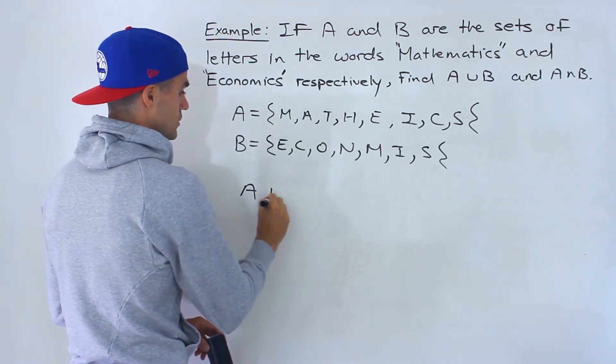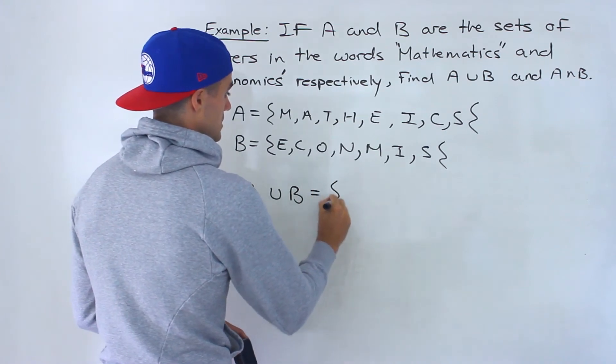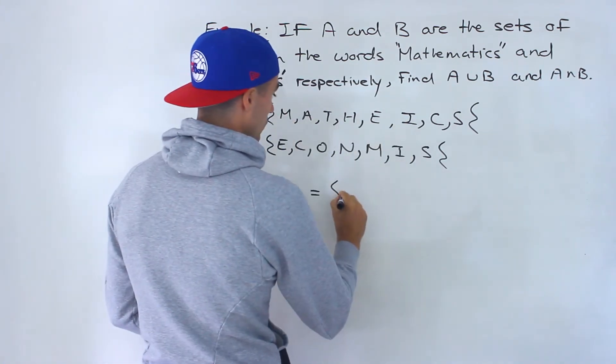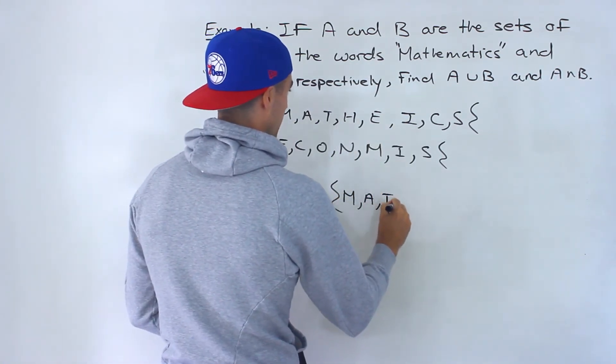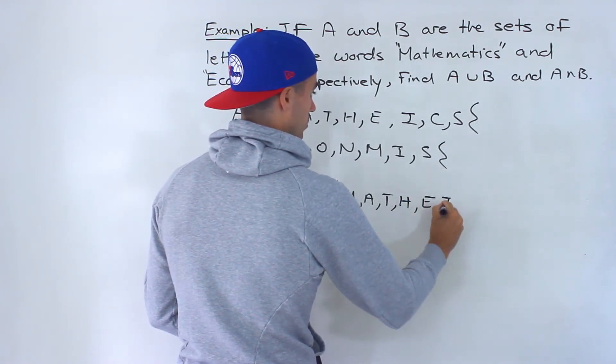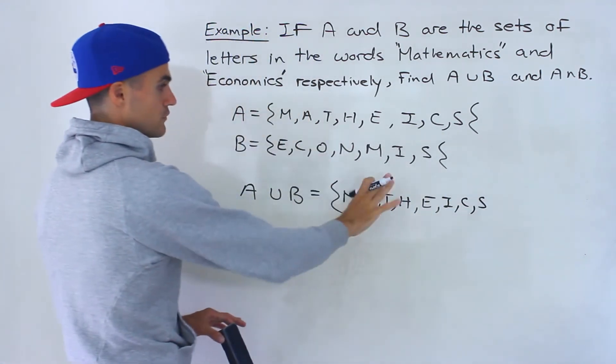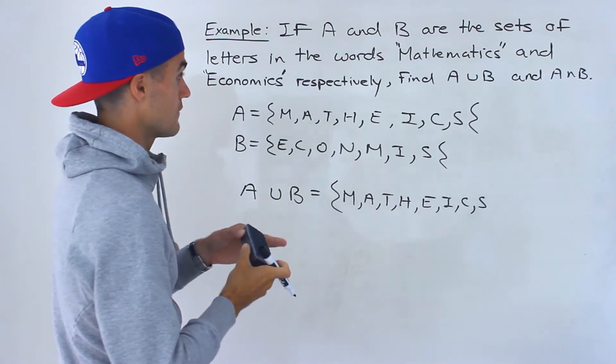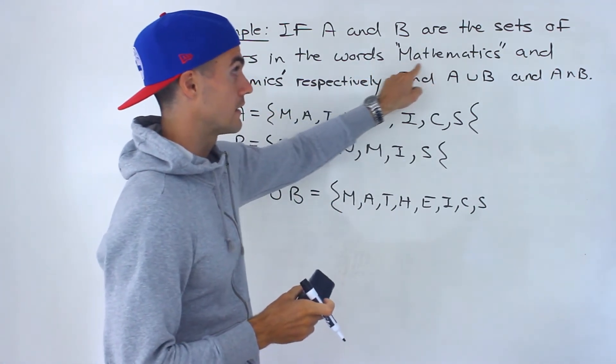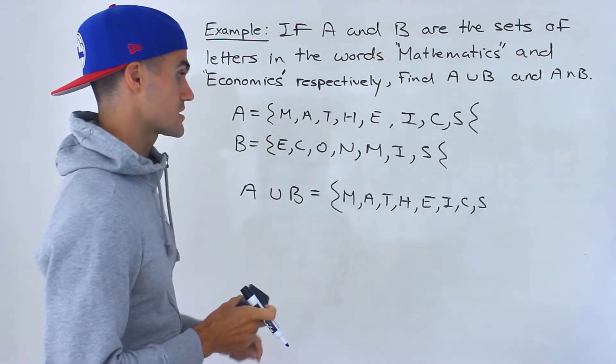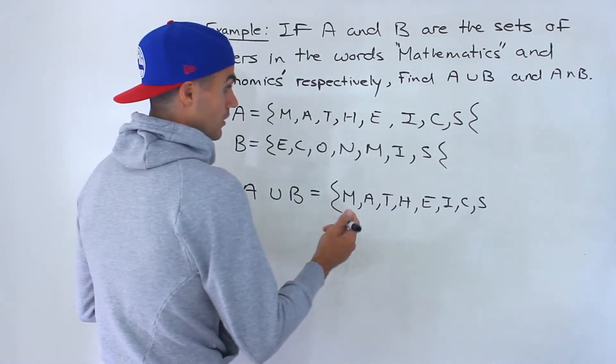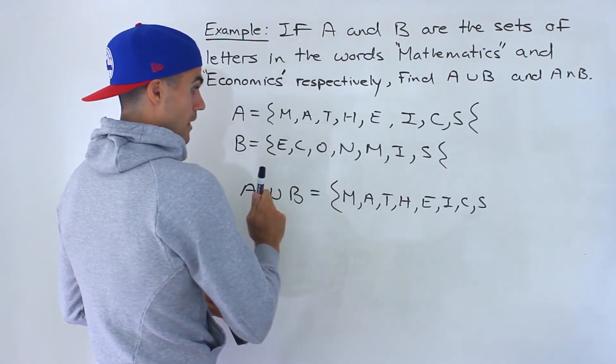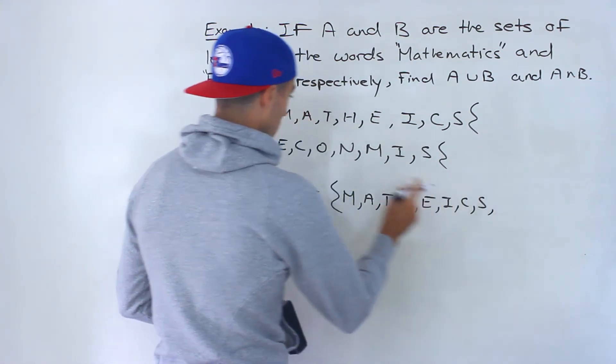Once you have this the union set is fairly easy. It's A or B, so what's in A or B. Well basically we can write out all of A first. You could have wrote all of B first if you want. The order doesn't matter, doesn't have to be in alphabetical order, didn't even have to be in the order the letters appear in the actual word but just for simplicity I kept it in that order.